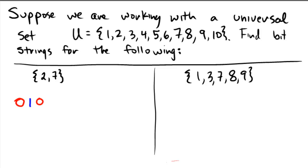3 is off, 4 is off, 5 is off, 6 is off, but 7 is on, and 8, 9, 10 are off. So the bit string that represents the set containing 2 and 7,